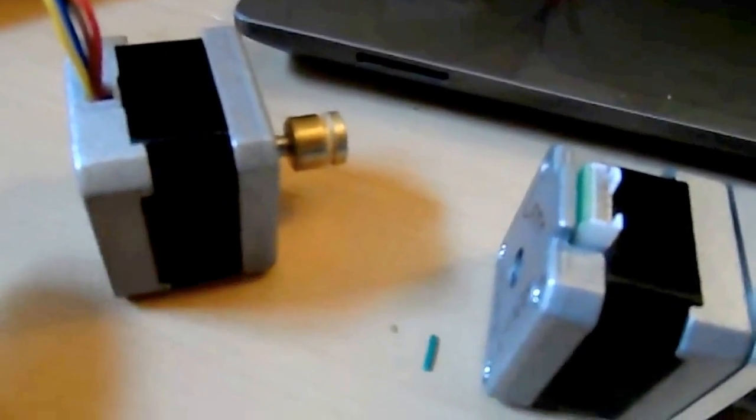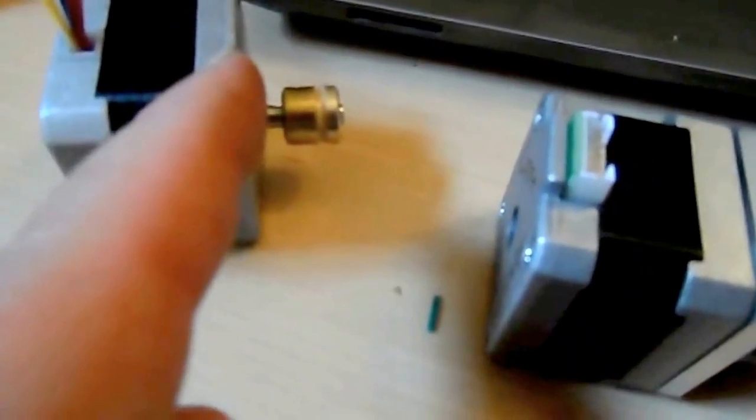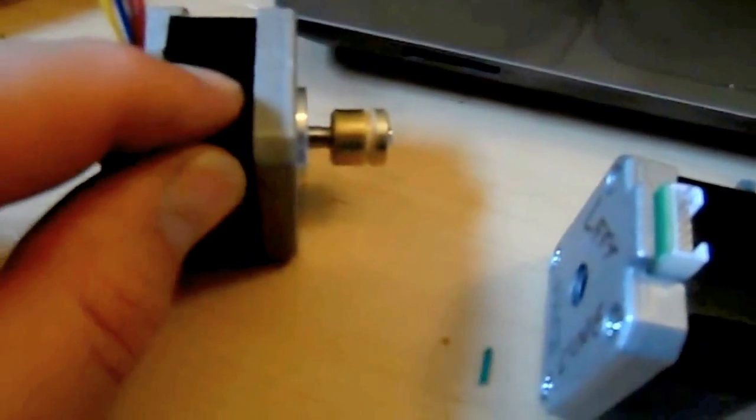I did the same with this one. So that is the original Flash Forge front plate and this is the Bulldog extruder motor. This is the Bulldog extruder with the Flash Forge main body.